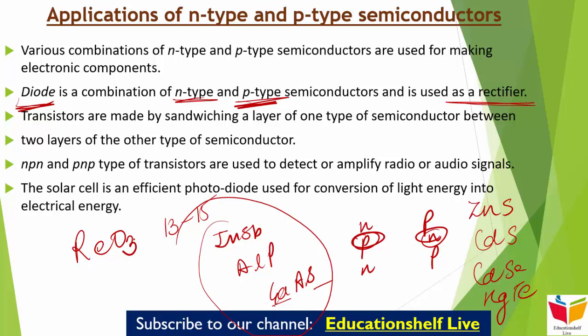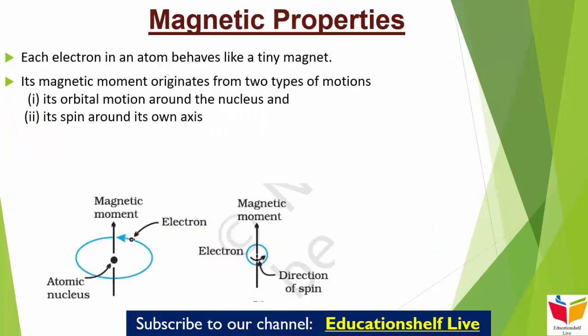ये था हमारा electrical properties। Next जो हमारा topic है वो है magnetic properties। हर एक substance में कुछ ना कुछ magnetic property associated होती है, and the origin of these properties lies in the electron। हर एक electron जो होता है एक atom में, वो एक छोटे magnet की तरह behave करता है। उसका जो magnetic moment है, वो दो type के motion से बन सकता है।